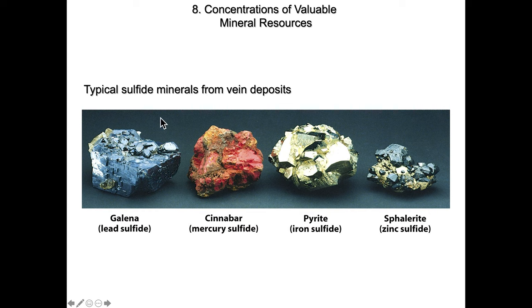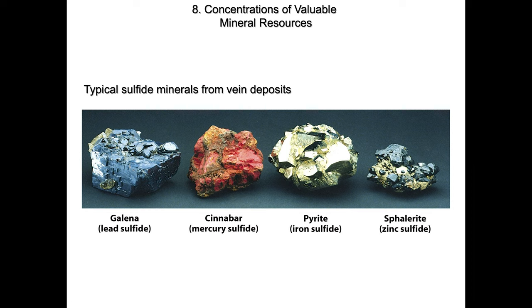Oftentimes these minerals can be associated with each other. In the case of the Viburnum Trend in southeastern Missouri, famous for hundreds of years for producing lead and also zinc, there are other such deposits around the world. We can actually trace them — looking at the concentrations of a number of different lead isotopes, we can determine which mine lead came from through history. If there's a lead deposit in a lake or ice, we can tell who made that deposit: was it the Romans, the Celts, the Europeans, or the Americans?